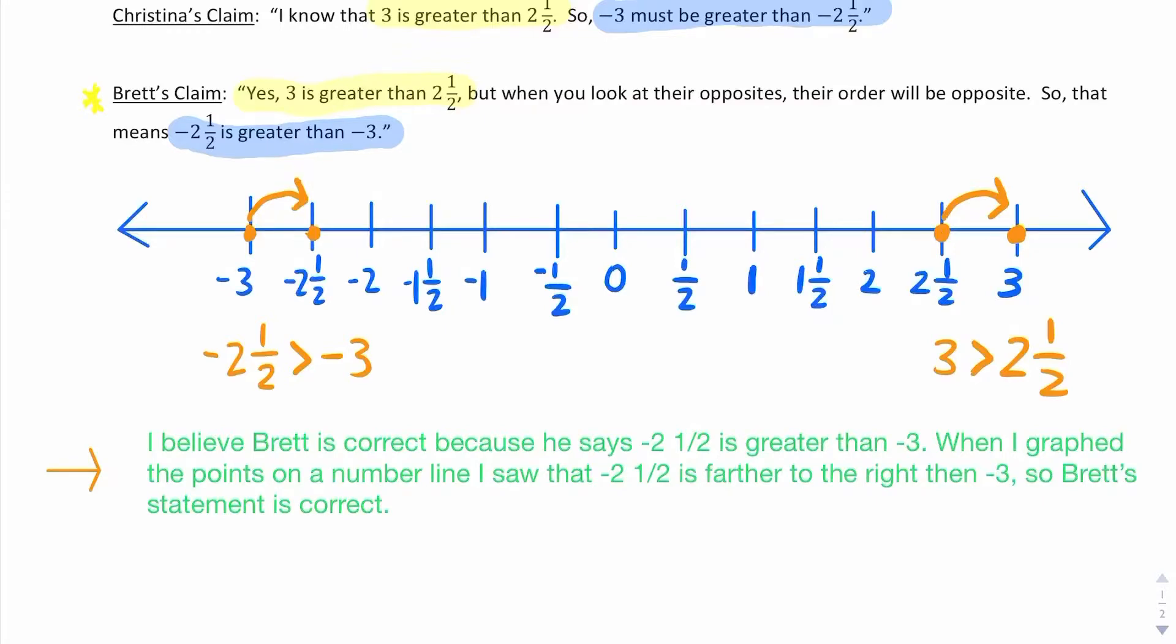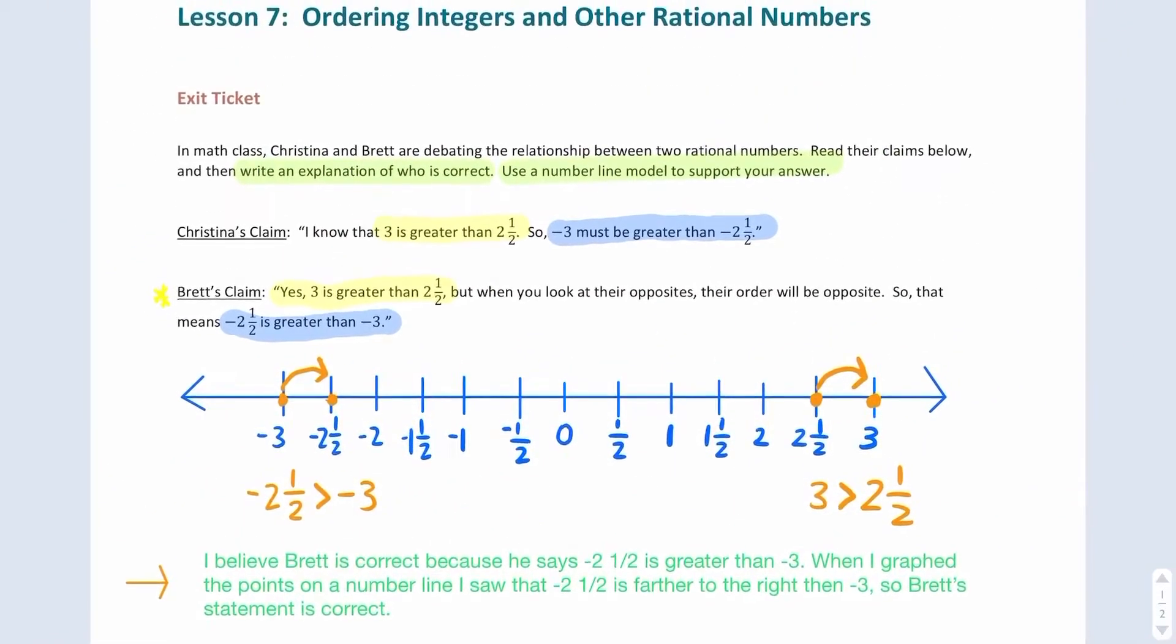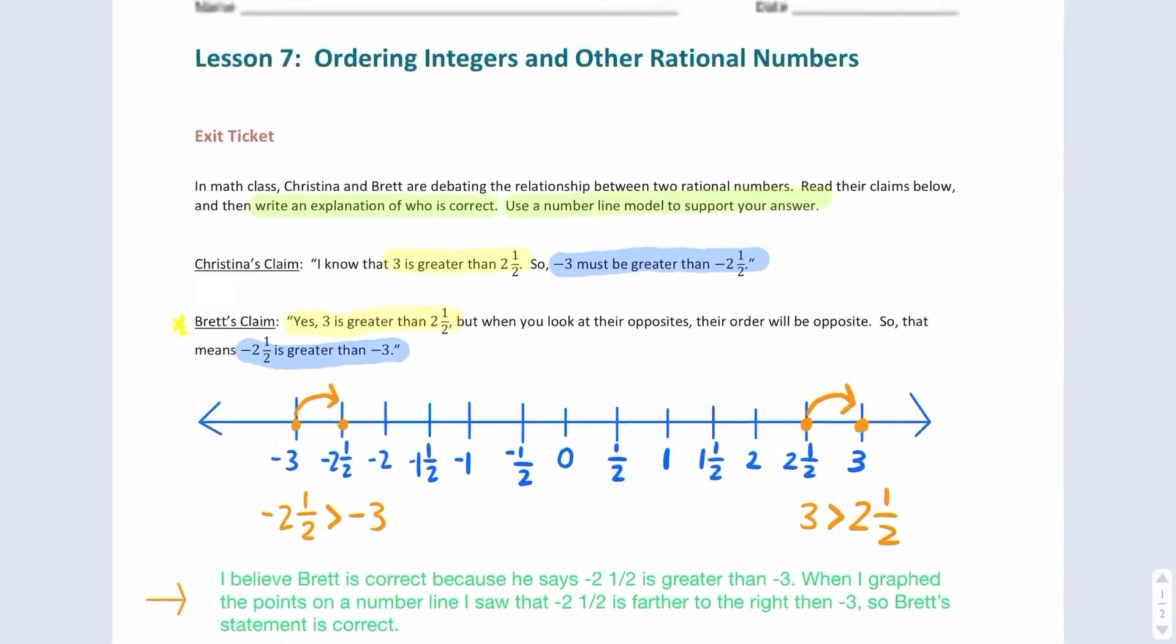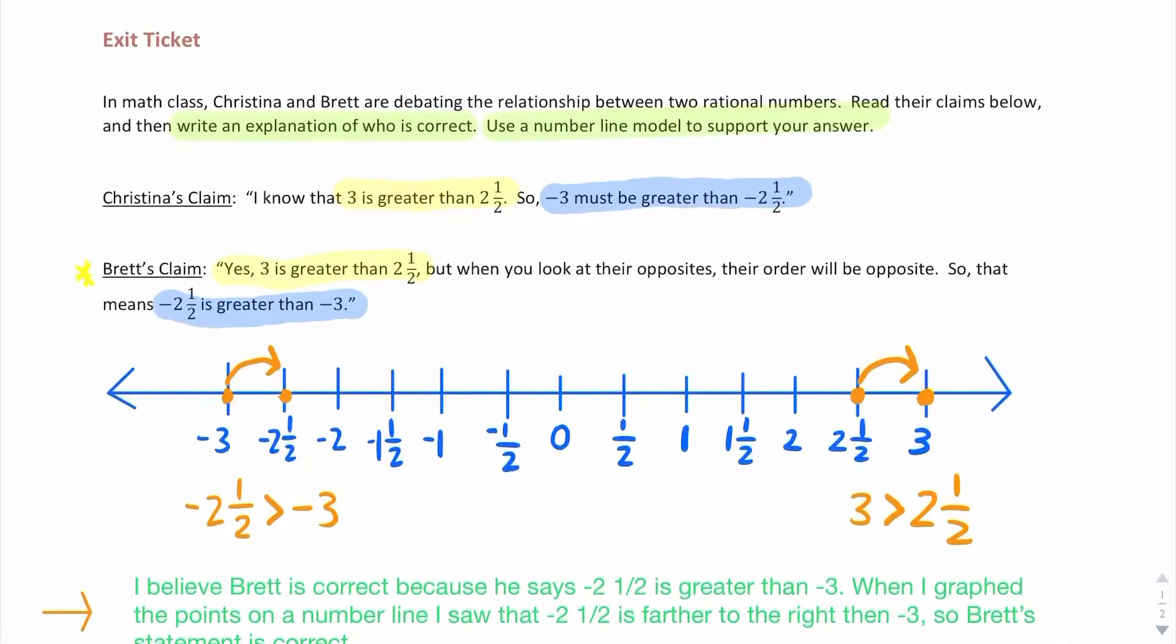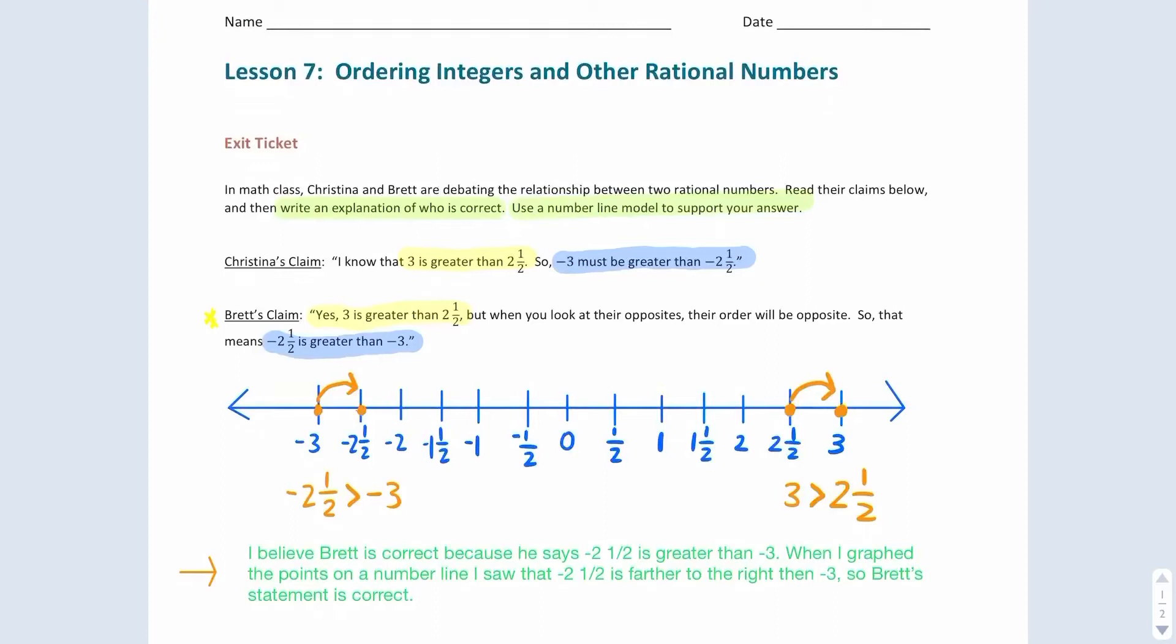All right, here you go. This is module 3, lesson 7, exit ticket. The main idea here was understanding the order of numbers. The numbers that are farther to the right on a number line are greater. The numbers that are farther to the left on a number line are lesser.